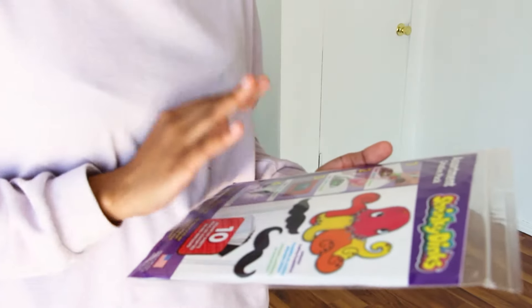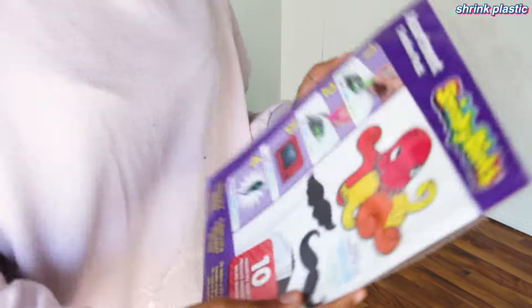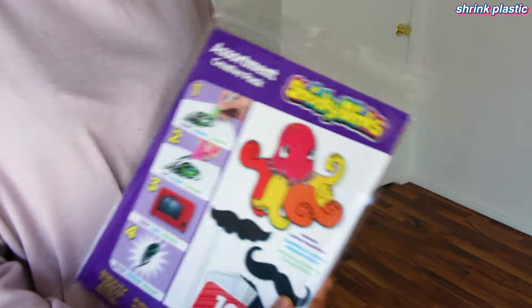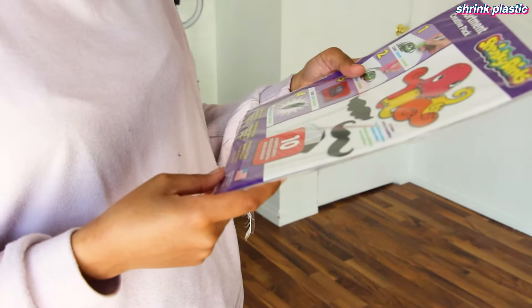So I got everything that I could possibly need to make them. First we have shrink plastic, obviously. I got this from Amazon and I think this is the brand that everyone is talking about. Shrinky Dinks has 10 sheets inside.